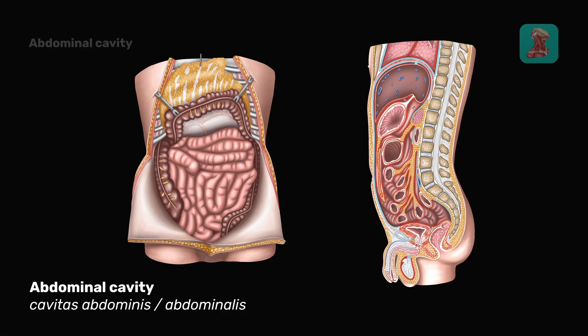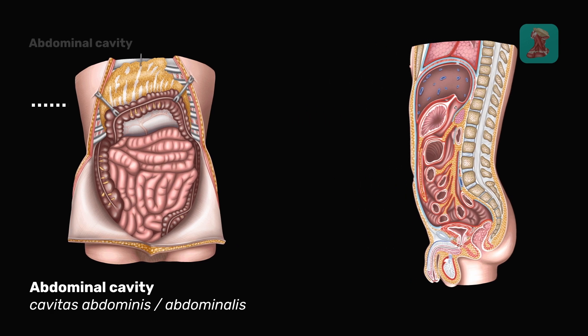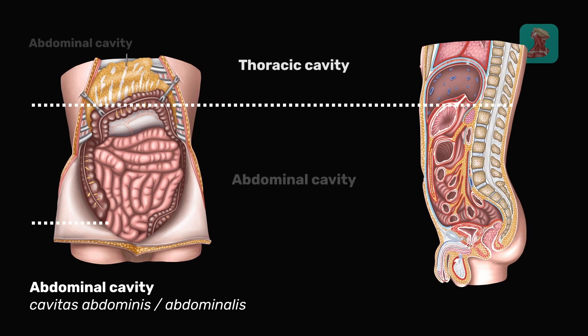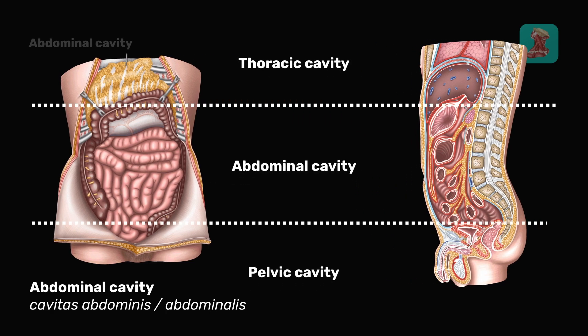The abdominal cavity is the largest cavity of the human body. It is located between the thoracic cavity and the pelvis.